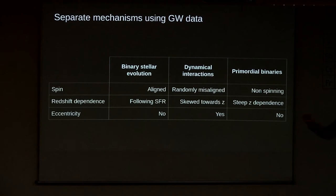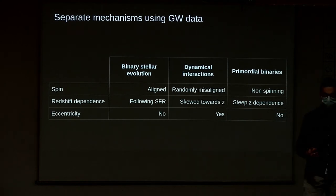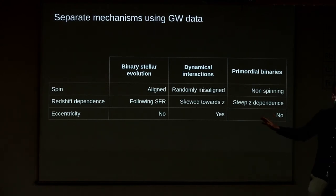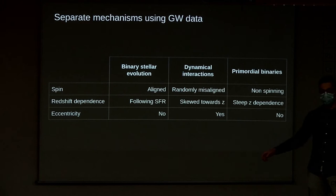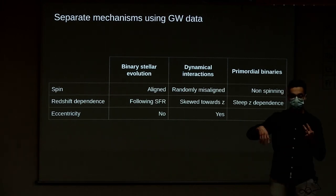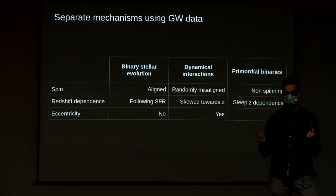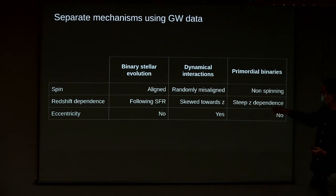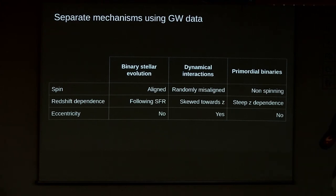How do we separate those channels using gravitational wave data, which is what we observe? The merger rate alone cannot separate the channels, but there are some parameters in the gravitational wave data that can. For example, the spin. In common envelope, the spin is aligned between the black holes. That does not happen for dynamical interactions, where the spin of the central binary need not be aligned. For primordial black holes, most theories assume they are non-spinning.